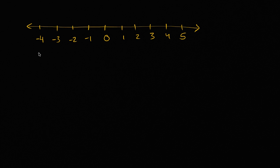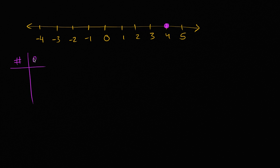In another video, we've already talked about what an opposite of a number is, but we'll review it a little bit. If we start with a positive number, say the number four, and we want to think about what the opposite of that number is — 'opposite' is just the symbol, or shorthand, for number — so if the number is four, what is its opposite?